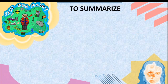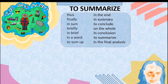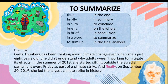Next function: to summarize. Sample transitions include: thus, finally, in sum, briefly, in a word, to sum up, in the end, in summary, to conclude, on the whole, in conclusion, in the final analysis. Example: Greta Thunberg has been thinking about climate change since she was just eight years old. She didn't understand why adults weren't working to mitigate its effects. In the summer of 2018, she started sitting outside the Swedish parliament every Friday as part of the climate strike. Finally, on September 20, 2019, she led the largest climate strike in history. The transition used here is 'finally.'